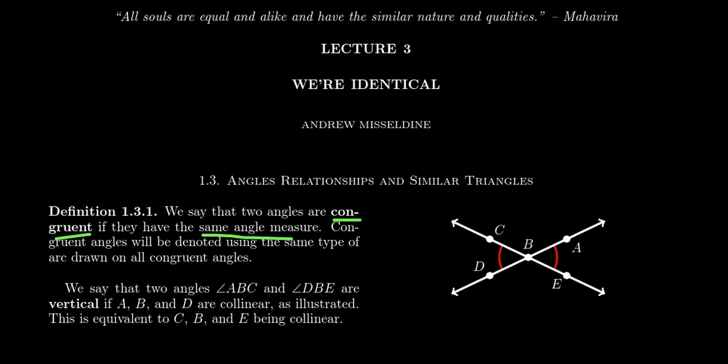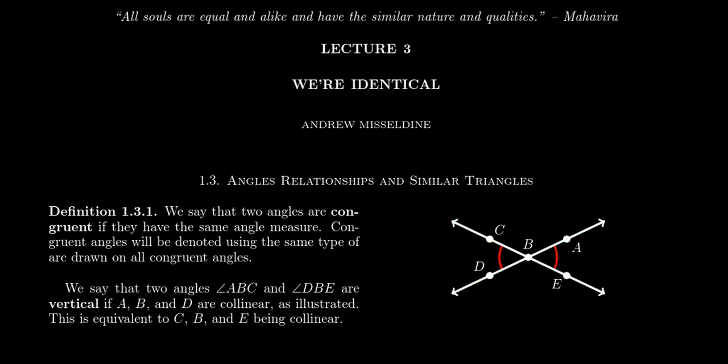For all intents and purposes, congruent angles are the same angle, even though they might exist in different places on the plane. Now, one condition that we have between angles that you can see in the diagram and that guarantees angles are congruent is the idea of vertical angles. What does it mean for two angles to be vertical? Well, let's imagine we have two straight lines that intersect each other at some common point B. So B is the intersection of these two lines.